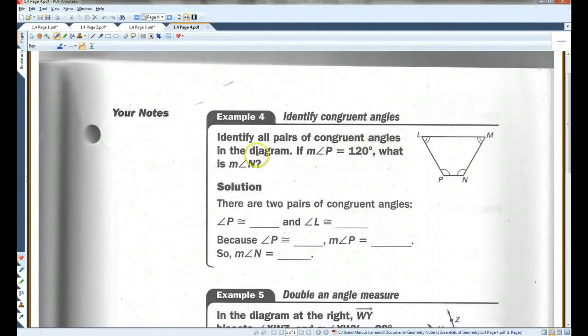Identify all pairs of congruent angles in the diagram. So first of all, if you look at the arcs, angle P is congruent to angle N because each of them have one arc. Angle L has two arcs. So does angle M. So these two angles are also congruent. Now, if angle P is 120 degrees, what is angle N? Well, because angle P is congruent to angle N, that means the measure of angle P equals the measure of angle N. Once again, this little M indicates measure. So the measure of angle N is also 120 degrees.